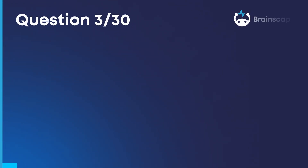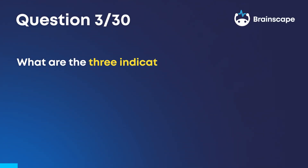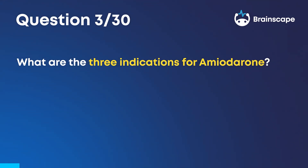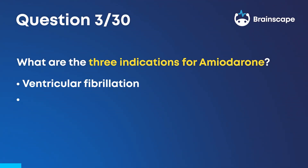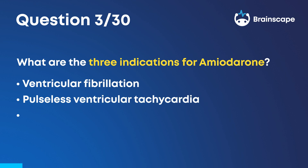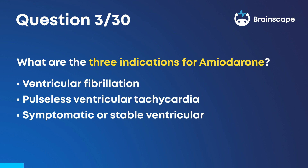Question 3. What are the three indications for amiodarone? Ventricular fibrillation, pulseless ventricular tachycardia, and symptomatic or stable ventricular tachycardia.